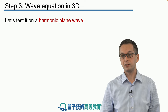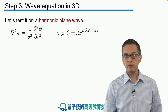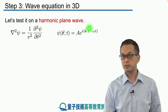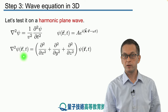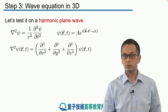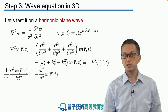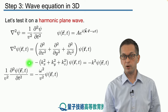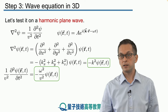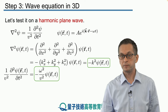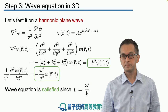Let's test this on a simple harmonic plane wave, just to make sure it works. Here's the wave equation in three dimensions, and we derived the form of the plane wave in the previous step. Substituting it in: on the left-hand side we get the Laplacian operating on the wave function, which gives minus k modulus squared times the wave function itself. On the right-hand side we get one over v squared times the second-order partial derivative with respect to time, which gives minus omega squared over v squared times psi. Harmonic plane waves satisfy the wave equation because of the phase velocity relation v equals omega over k.